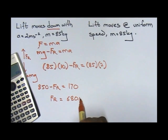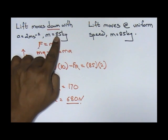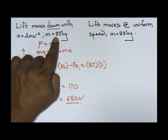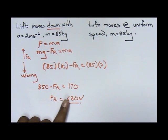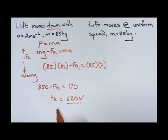So your FR is 680 newtons. See, your mass is 85 kilograms. That means if I change it to newtons it is 850 newtons. But if the lift goes down with acceleration, the reading at the electronic balance becomes lesser.